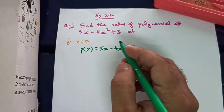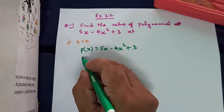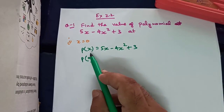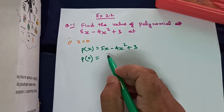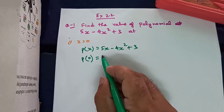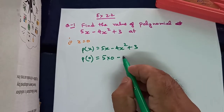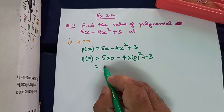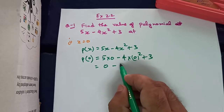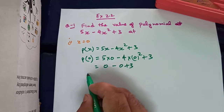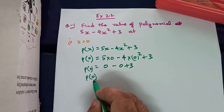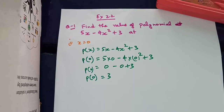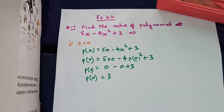We need to find out the value of the polynomial at x equals 0, which means we need to find p(0). p(0) is the value of the polynomial at x equals 0. So we substitute x as 0 in all places: 5x becomes 5 times 0, minus 4x squared becomes 4 times 0 squared, plus 3. So 5 times 0 is 0, minus 0 squared is 0, times 4 is again 0, plus 3. So the value of the polynomial at x equals 0 is 3.